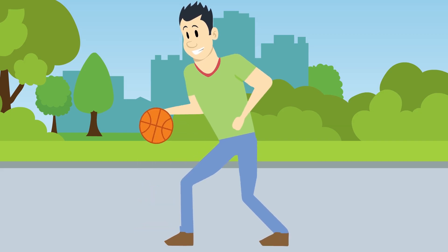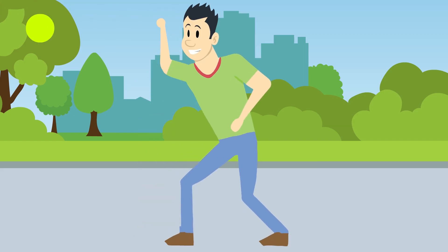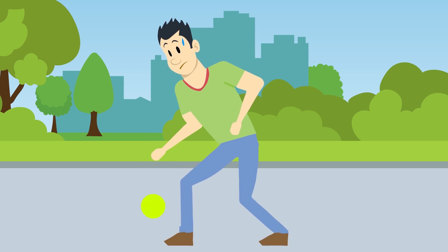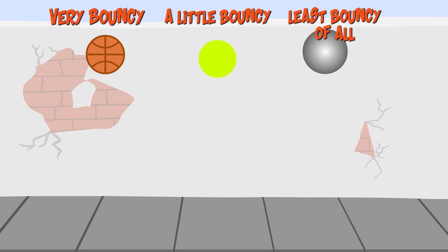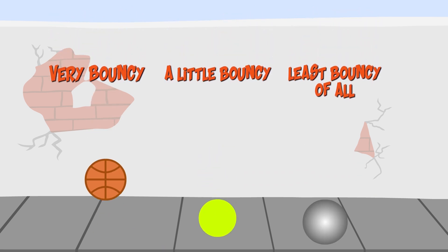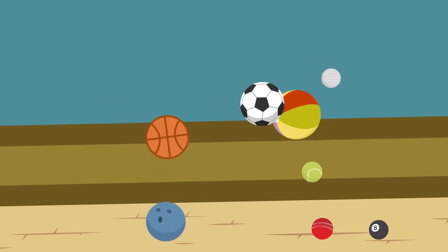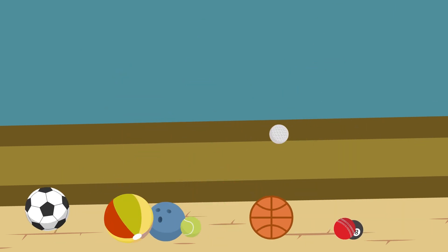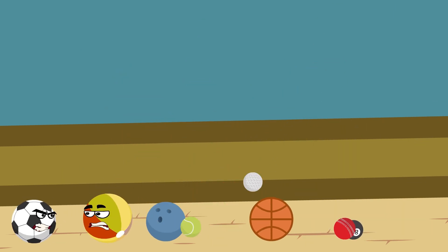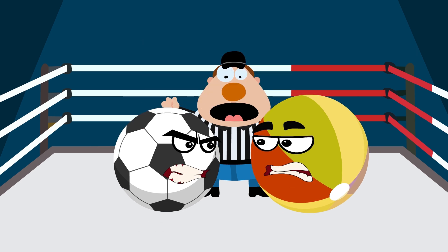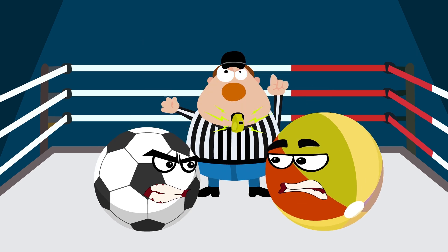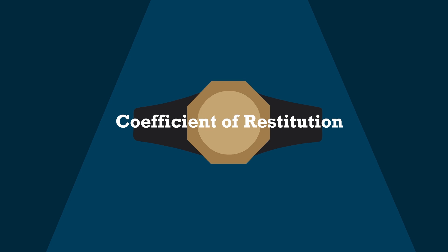You may have noticed that a basketball bounces very well, but a plastic ball isn't as good. And if you were to bounce a lead ball, it would hardly bounce at all. Rubber is more elastic than plastic, which is, in turn, more bouncy than lead. Every object has a different way of reacting while interacting with another object. Given that, how do we compare any two objects in terms of their bounciness? For this, we use a term called the coefficient of restitution.